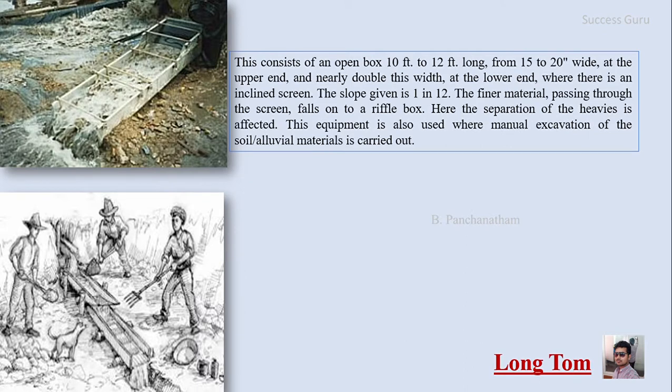The next method is the long tom. It consists of an open box 10 to 12 feet long, 15 to 20 inches wide at the upper end and nearly double that width at the lower end, with an inclined screen. The slope given is 1 in 12. The finer material passes through the screen and falls into a riffle box where separation of the heavy minerals is achieved. This equipment is also used where manual excavation of alluvial material is carried out.